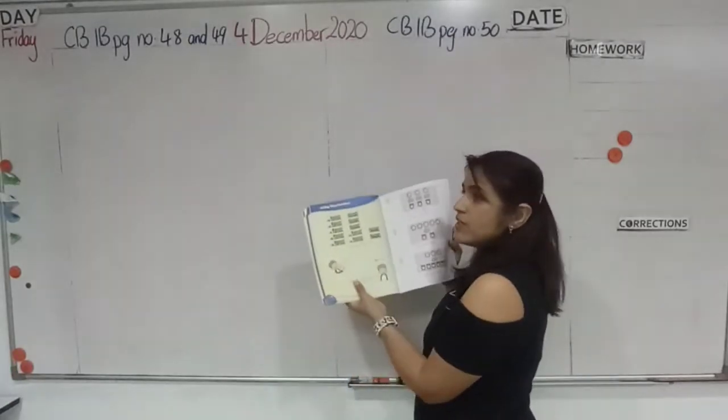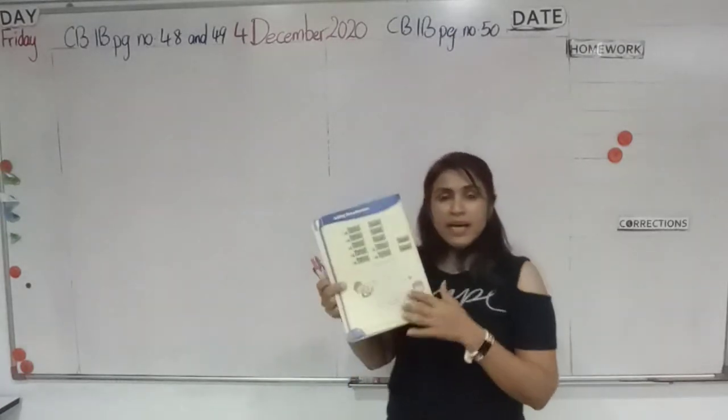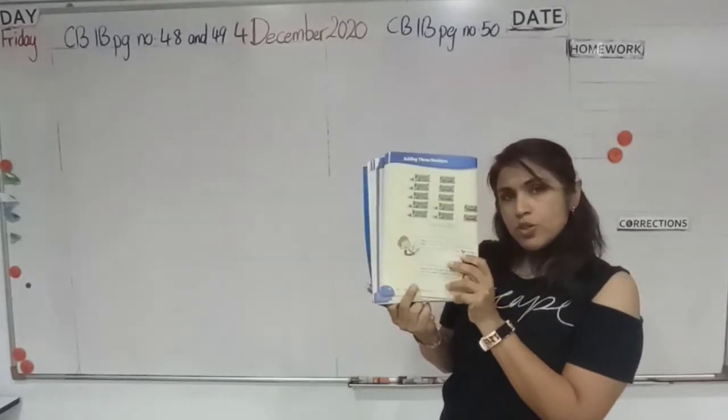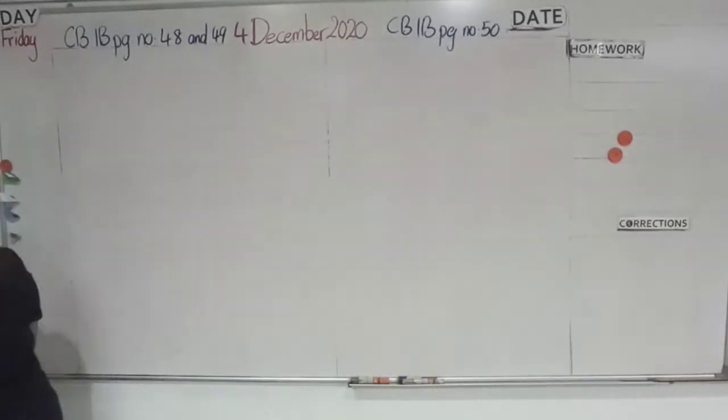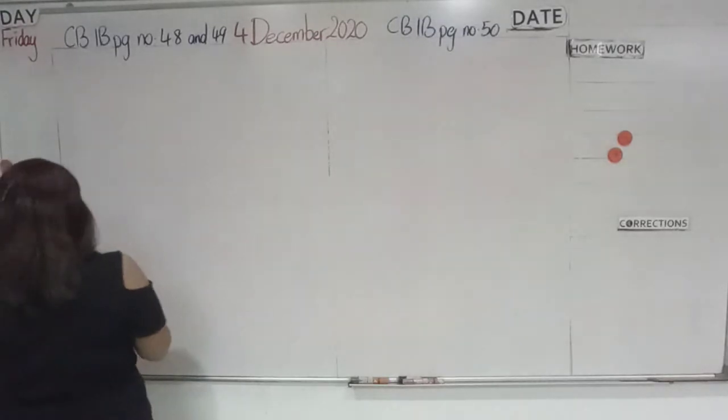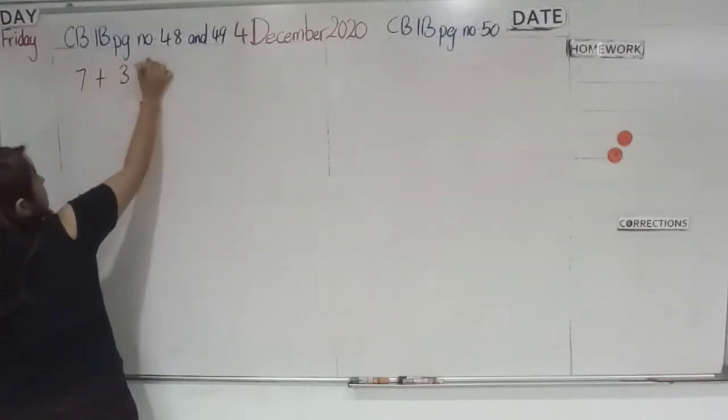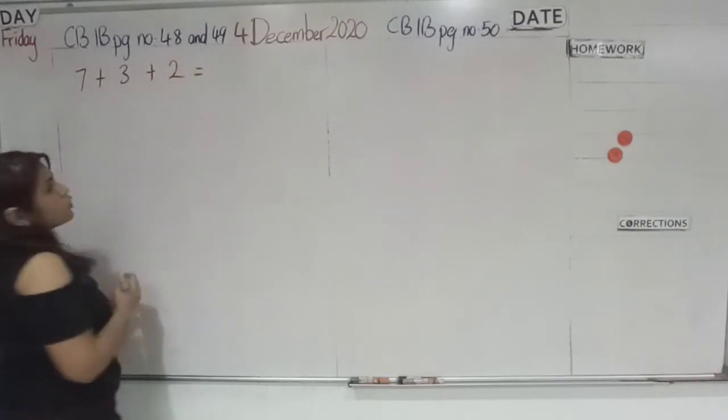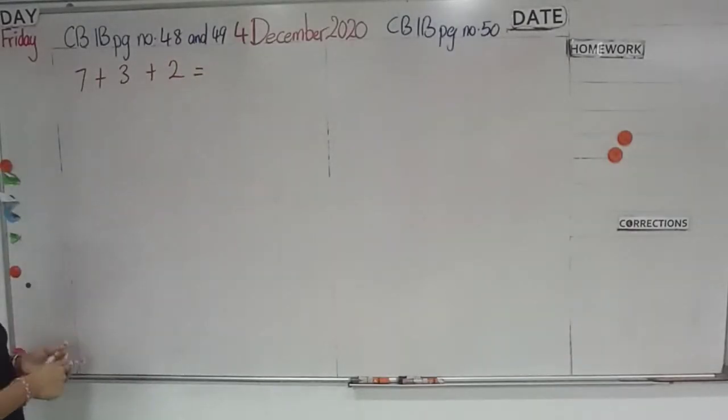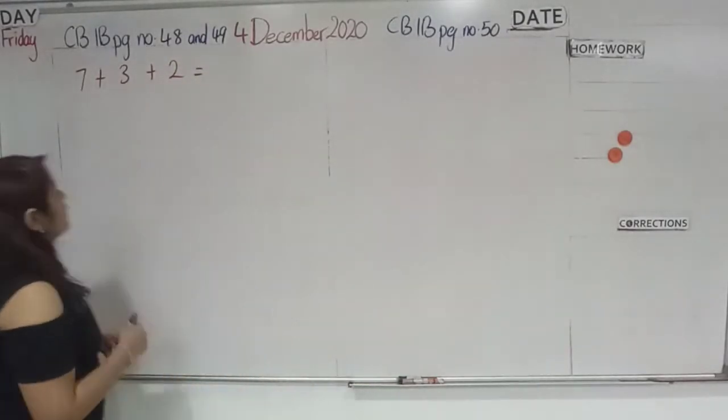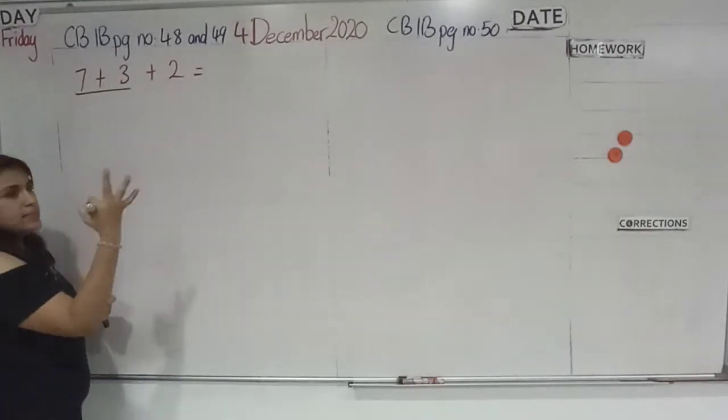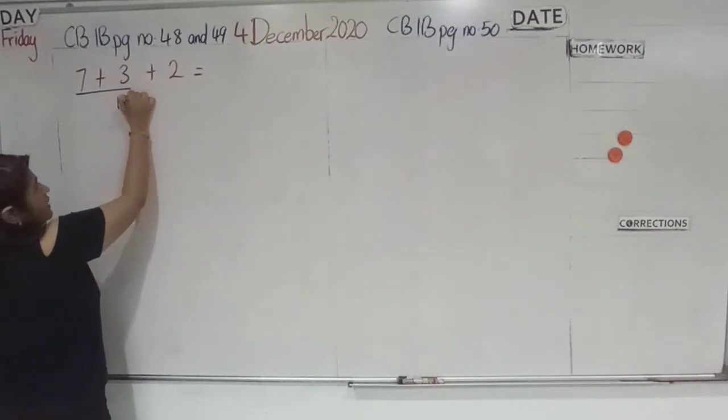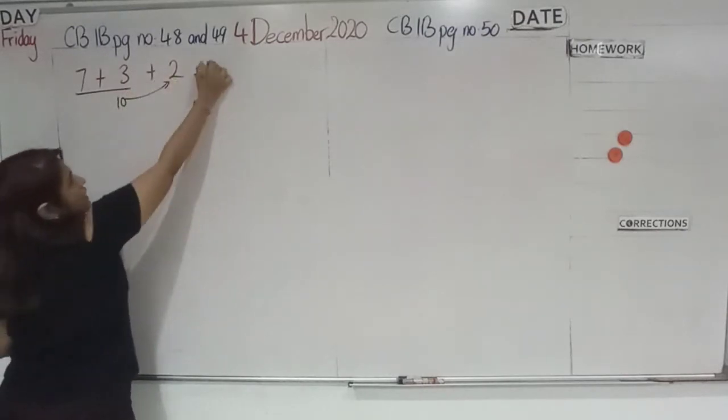Alright, as you can see here, David is explaining us how to do 3 numbers counting. So, he says there is 7 plus 3 plus 2. So what do we do? We add the first 2 numbers, that is 3 plus 7, 7, 8, 9, 10, so 3 plus 7 is 10, 10 plus 2 is 12.